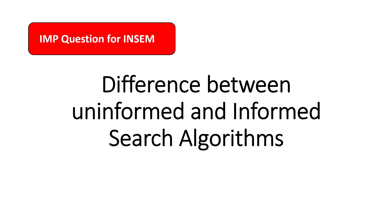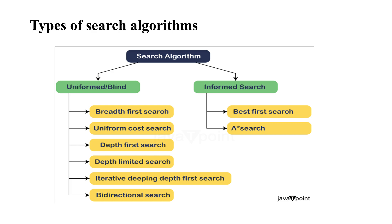In the previous lecture we explored what a search algorithm is and the terminologies used in search algorithms. In this particular lecture we are going to see what uninformed search and informed search are, and which different algorithms come under each category.